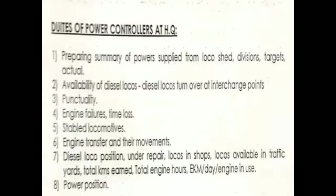Duties of Power Controllers at Headquarters: Preparing summary of powers supplied from loco sheds, divisions — targets and actual — availability of DC locos, DC loco turnover at interchange points, punctuality, engine failures, time loss, stable locomotives, engine transfer and their movements and conditions. DG loco position under repair, loss in shops, locos available in traffic yards, total kilometers and total engine hours, EKM per day, engines in use, and power position.